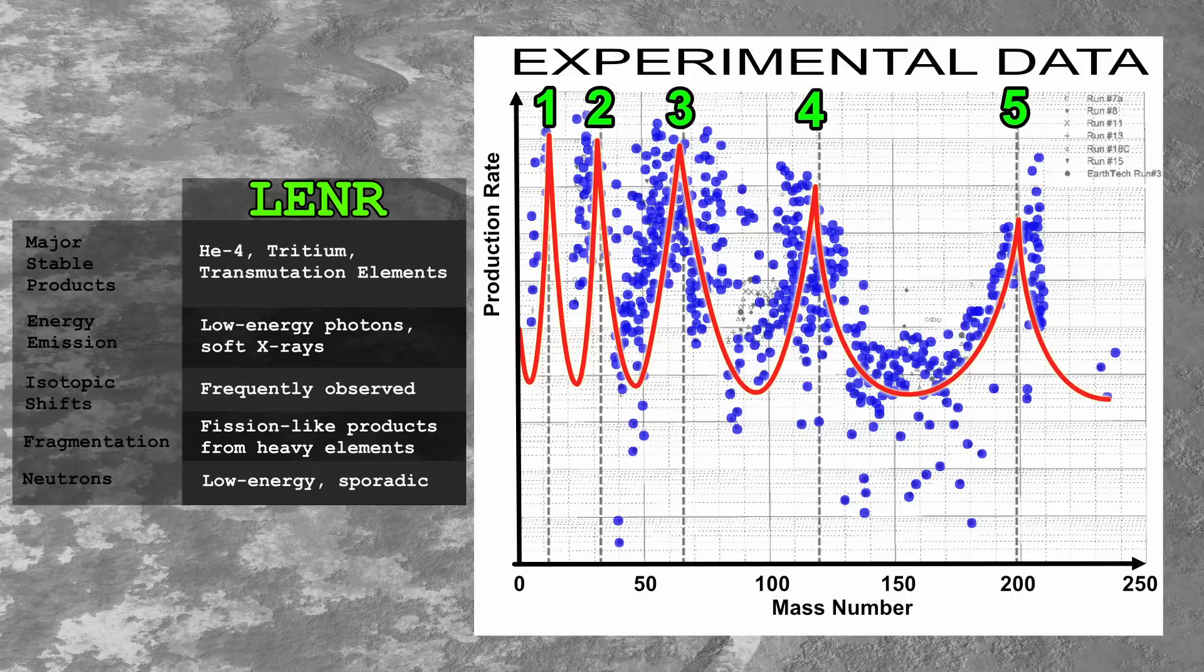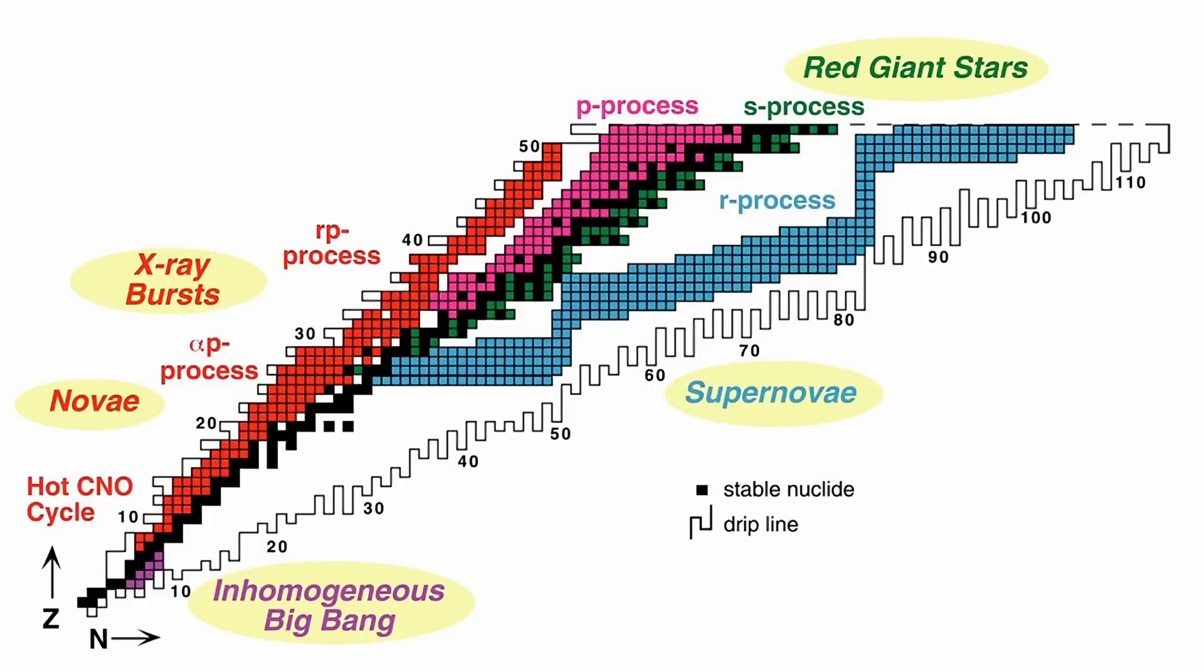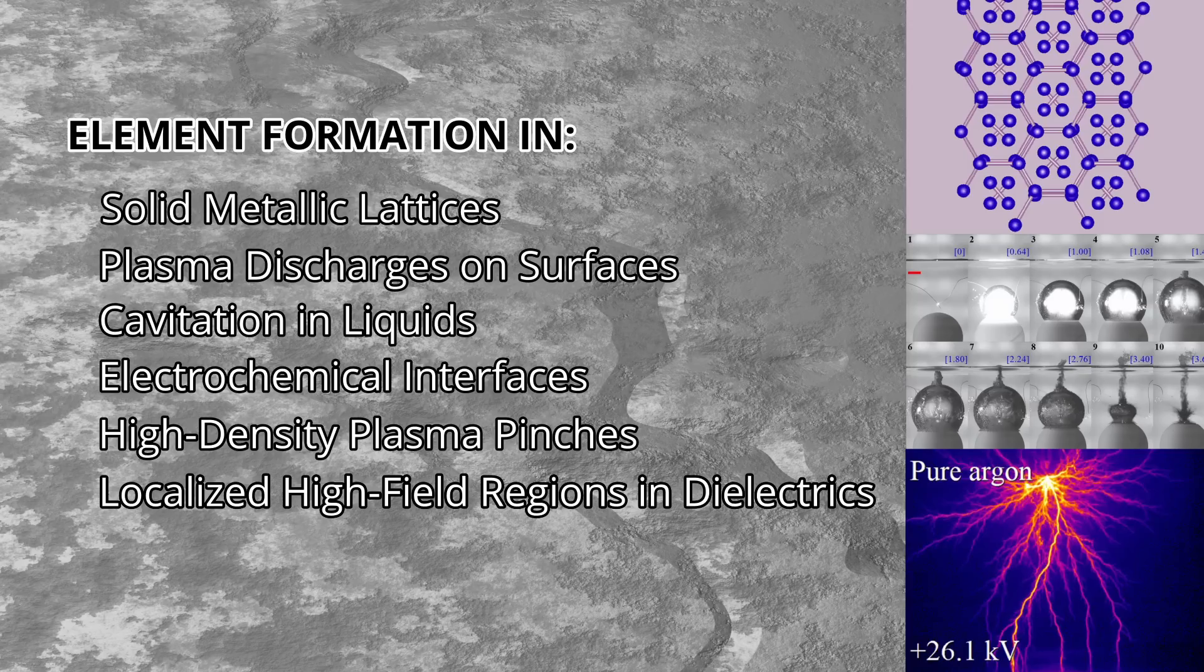These unconventional reactions, facilitated by unique material conditions observed in LENR experiments, may represent new pathways for nuclear synthesis. They challenge the boundaries of our current understanding and raise questions about the environments in which elements can form and transform.